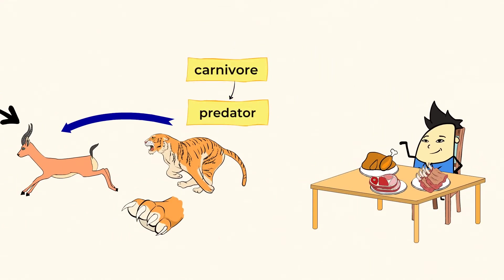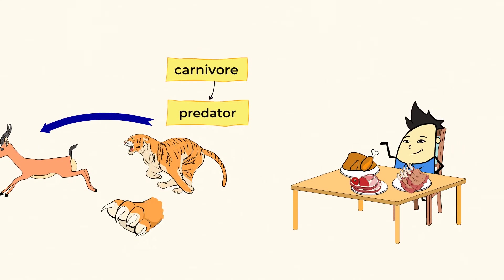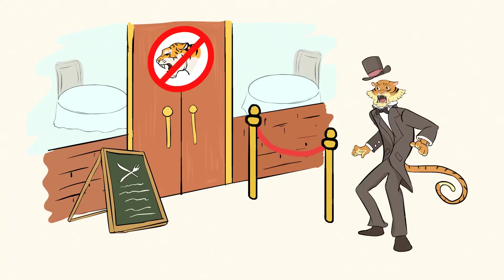They are also called predators. A predator is an animal that hunts other animals for its food supply. Tigers have to do that because they just can't go to a restaurant and order a meal.